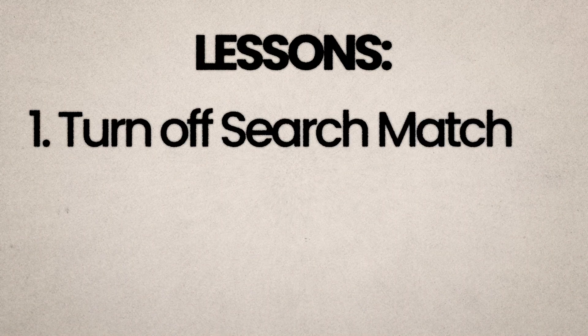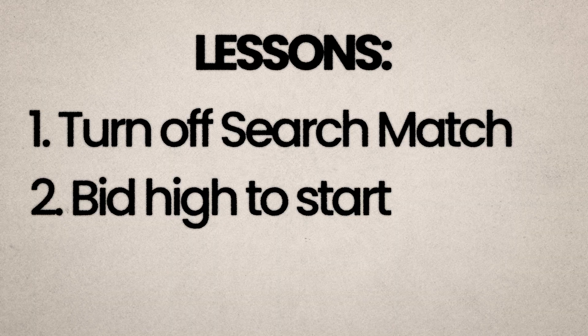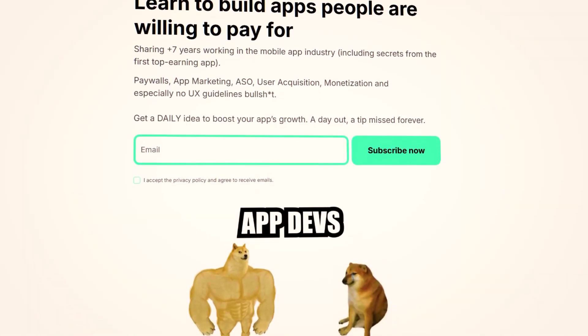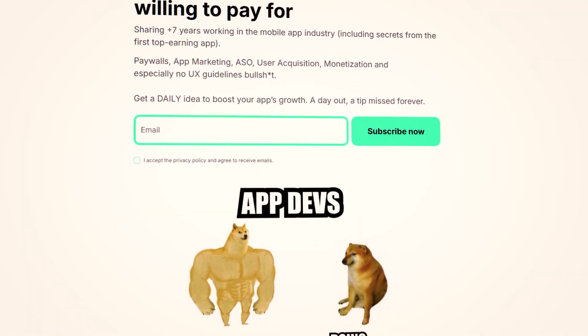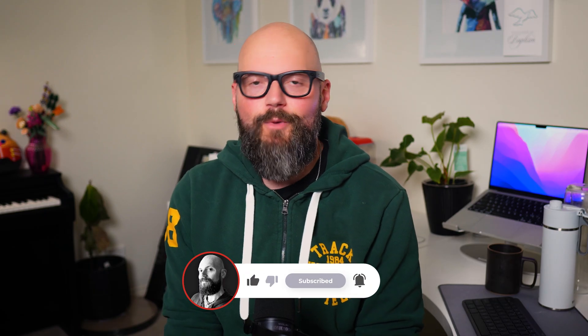So to recap: turn off Search Match for every ad group you create, set a high bid for keywords when you first start, and create new campaigns for each keyword group objective. If you have any specific questions about App Store ads, let me know in the comments. I also recommend checking out the App Store Growth Academy by Tia Dora — I'll put a link in the description below. She's been kind enough to help me every step of this App Store ads journey.